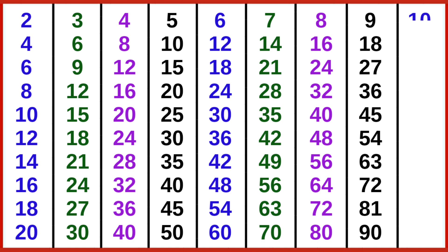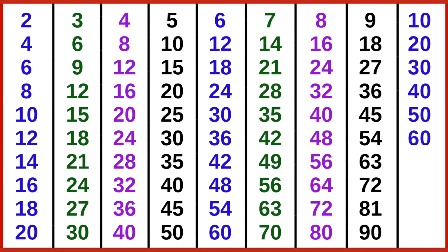10 ones are 10, 10 twos are 20, 10 threes are 30, 10 fours are 40, 10 fives are 50, 10 six are 60, 10 sevens are 70, 10 eights are 80, 10 nines are 90, 10 tens are 100.